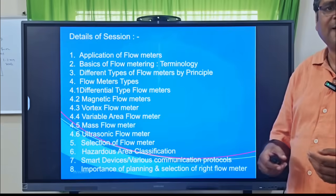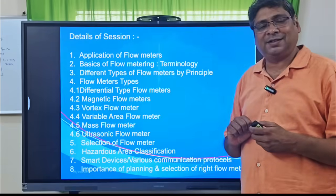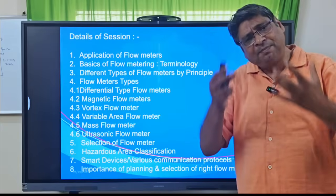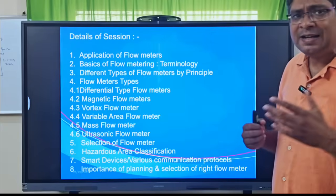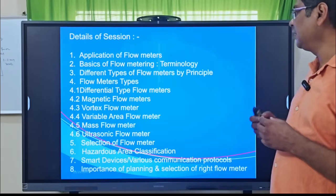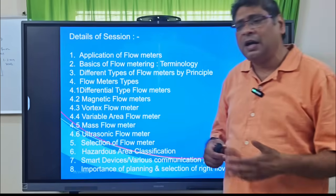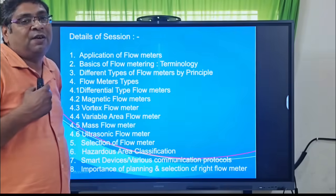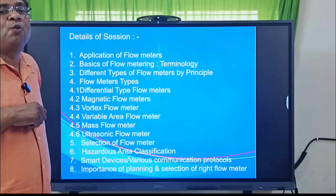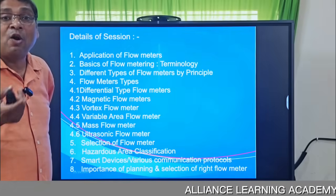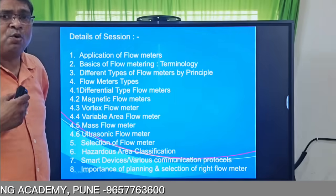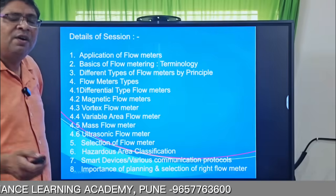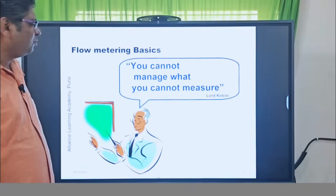After that we will see different kinds of principles and how many kinds of flow meters the market offers for different applications. We will look at five main flow meters: first, the differential pressure meter (orifice meter); second, the electromagnetic flow meter (EMF); third, vortex; fourth, variable area flow meters; and fifth, mass flow meters. We'll also cover how to select flow meters, considerations for hazardous areas like oil and gas, and various communication protocols and smart devices.